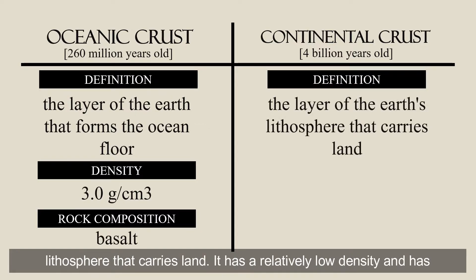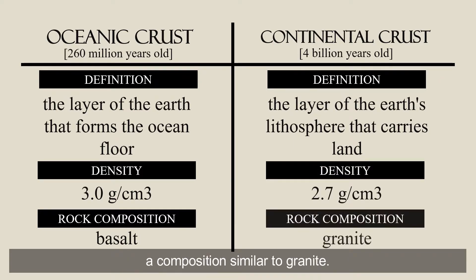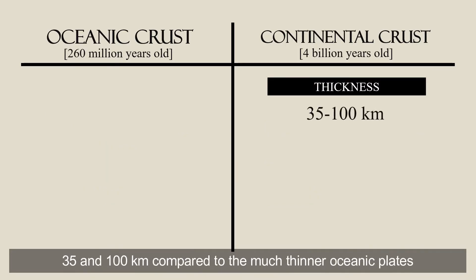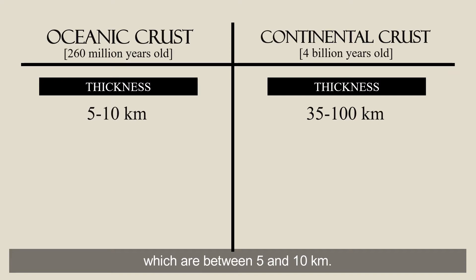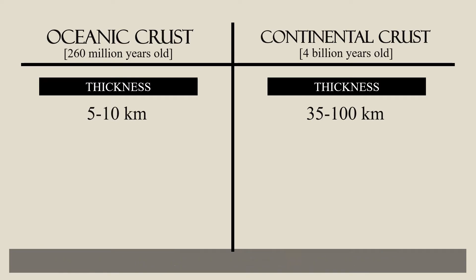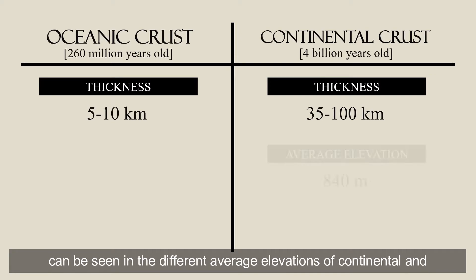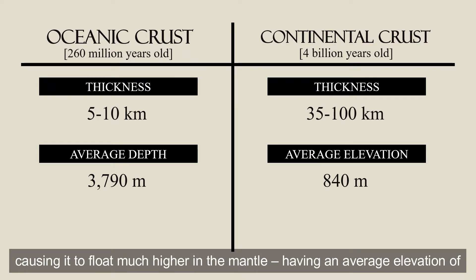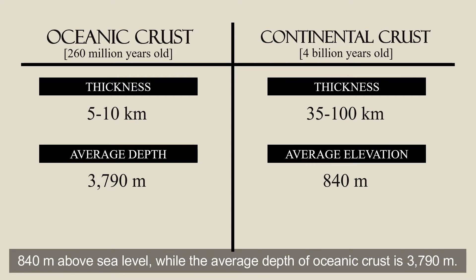On the other hand, the continental crust is the layer of the Earth's lithosphere that carries land, and it has a relatively low density and a composition similar to granite. Continental plates are usually quite thick — between 35 and 100 kilometers — compared to the much thinner oceanic plates, which are between 5 and 10 kilometers. The less dense continental crust has greater buoyancy, causing it to float much higher in the mantle, having an average elevation of 840 meters above sea level, while the average depth of oceanic crust is 3,790 meters.